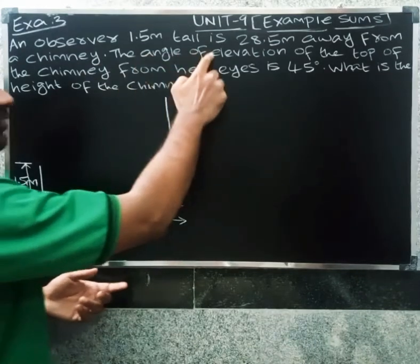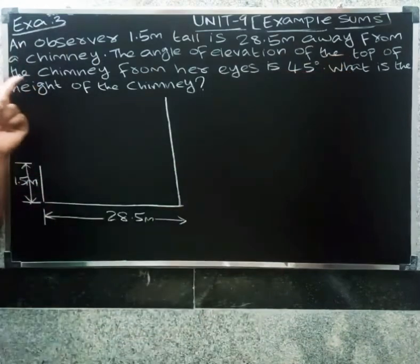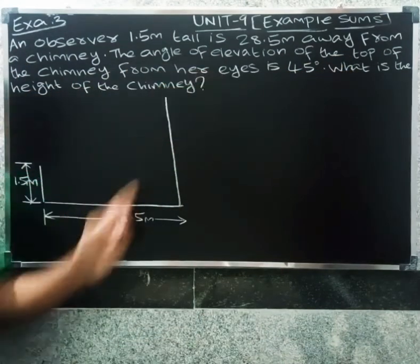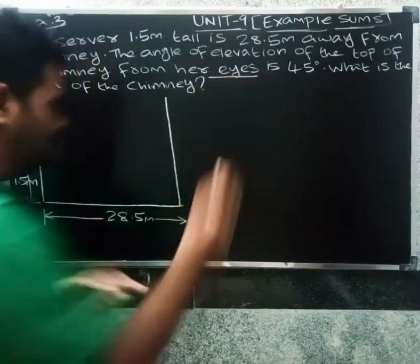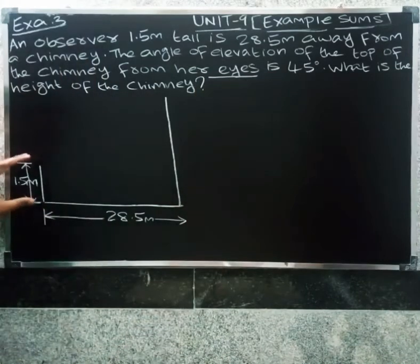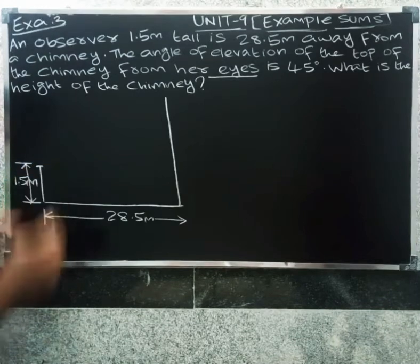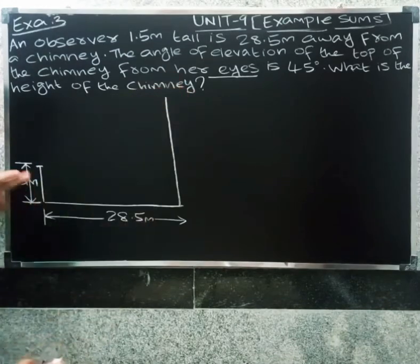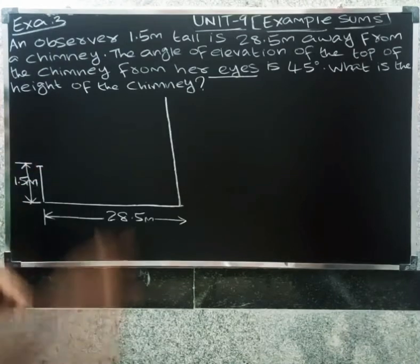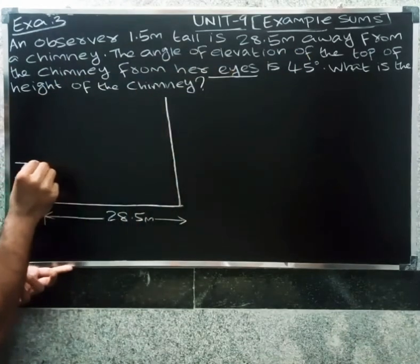The angle of elevation above the top of the chimney from her eyes is 45 degrees. Note: the measurement is from her eyes, not from her foot — this will affect how we draw the diagram.